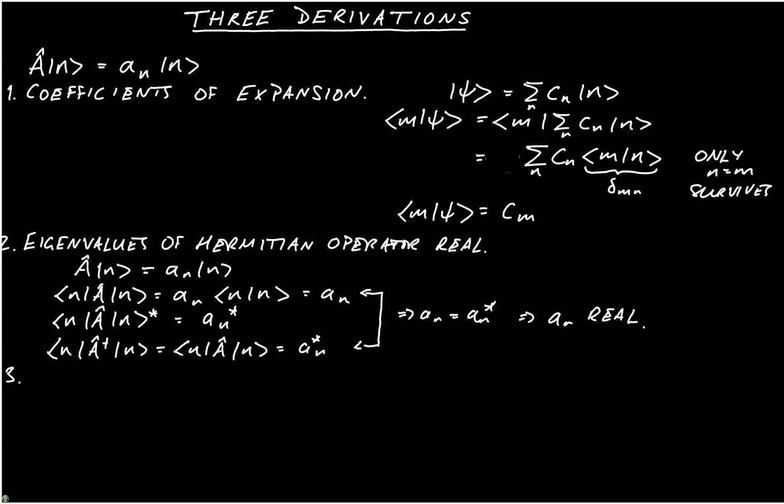Finally, I will just briefly consider the expectation value of an operator. Again, remember that we're taking this in a general state ψ. We write the expectation value as ⟨Â⟩, and we're saying that we're evaluating this in a state ψ, which we write like that.